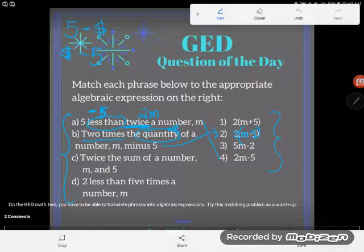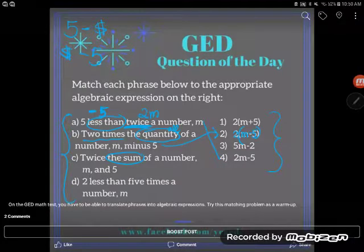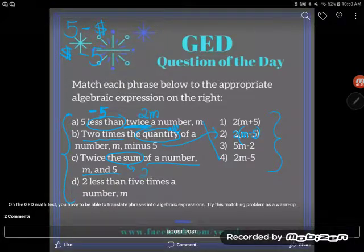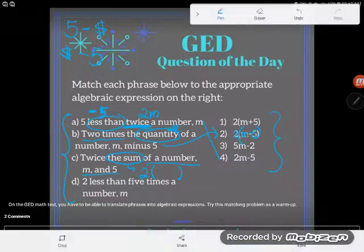Let's look at the next one which works similarly. C. C says twice the sum of a number M and five. Twice. Look, it doesn't say twice a number. It says twice the sum of a number M and five. Remember what sum means. It means the answer when you add, or an entire addition problem. So if I want to have twice of the answer when I add, or the entire addition problem, again, similarly, I'm going to have to use parentheses.